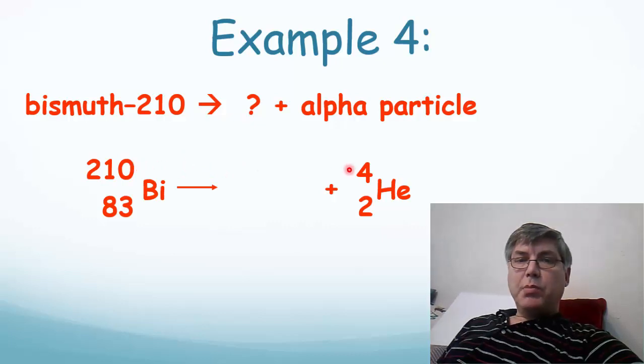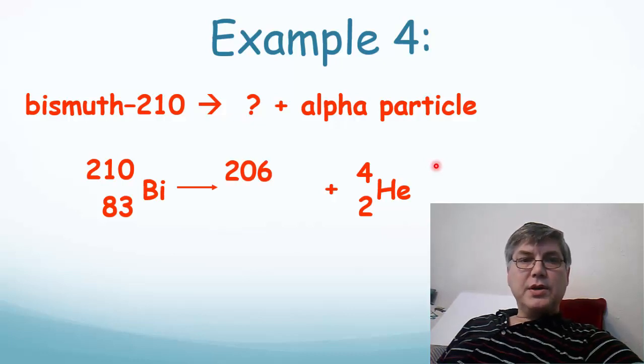So 210 is equal to something plus 4. What's the something? How about 206? 83 is equal to something plus 2. What plus 2 equals 83? Hopefully you can all do that math. It's 81. Now we just have to look up 81 on the periodic table, and we can find out what the element is. The element with an atomic number of 81 is TL. That's thallium.